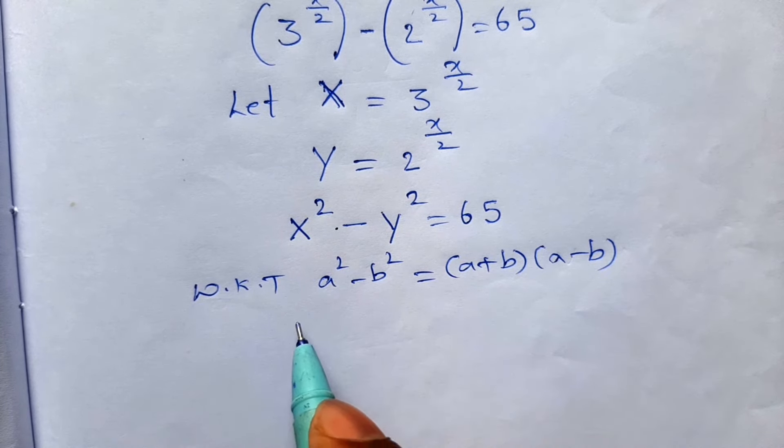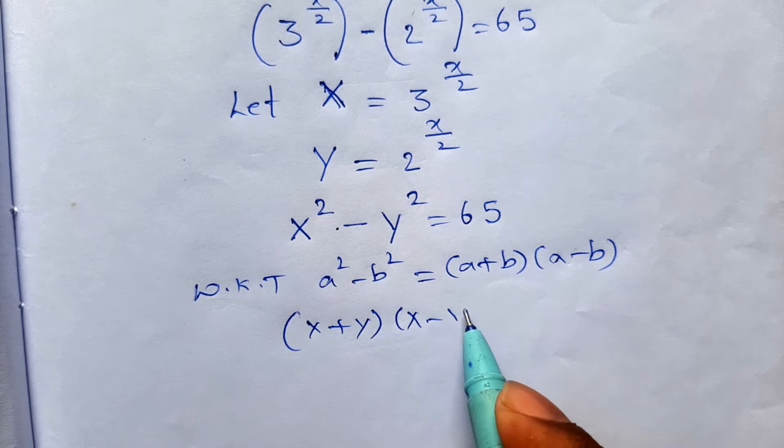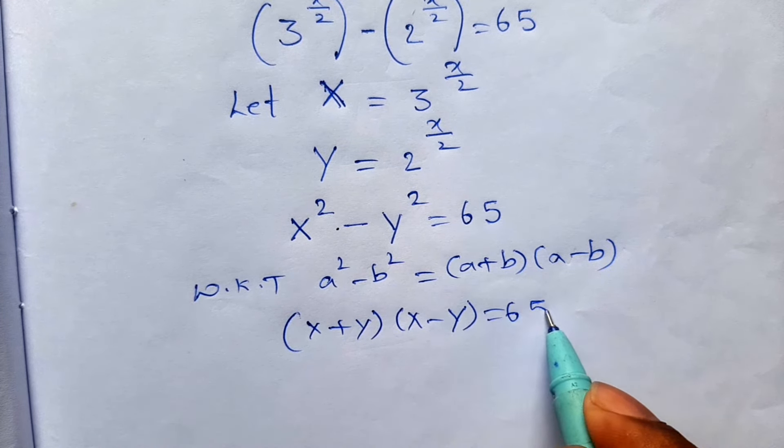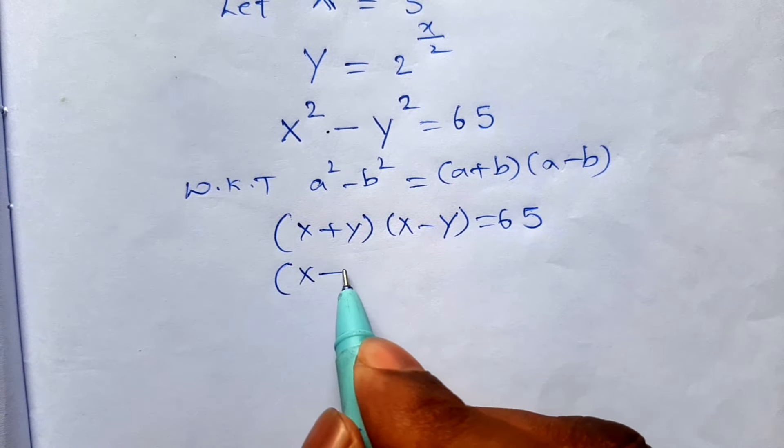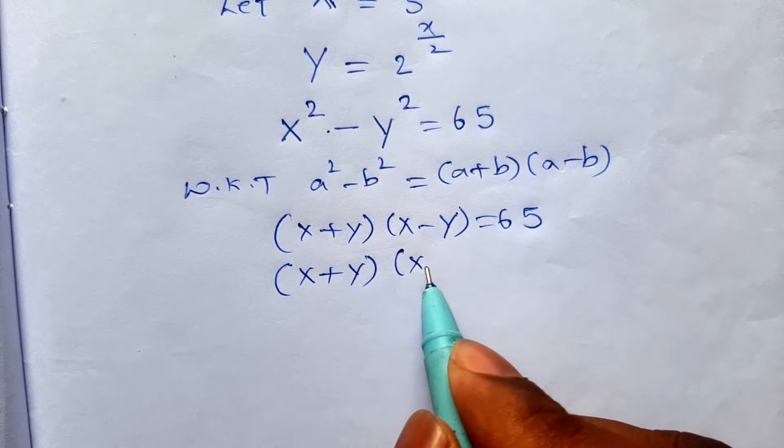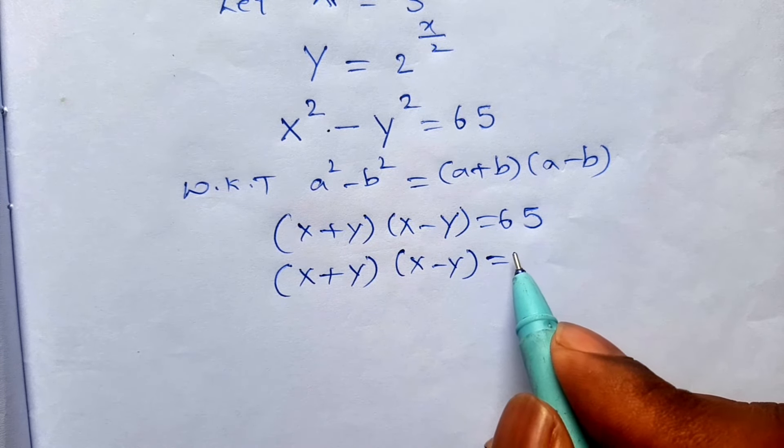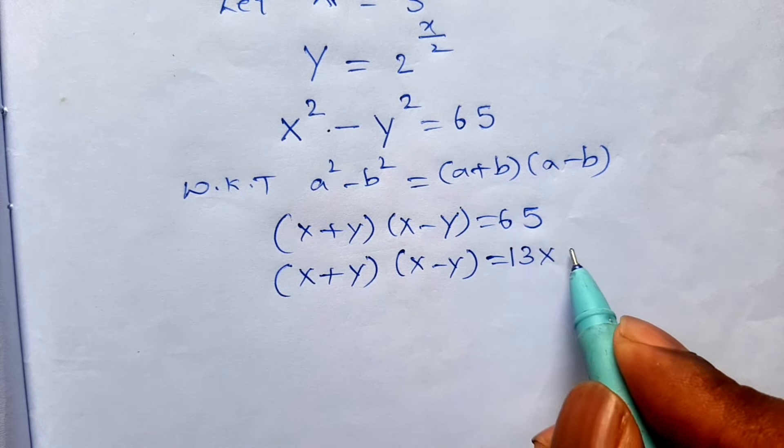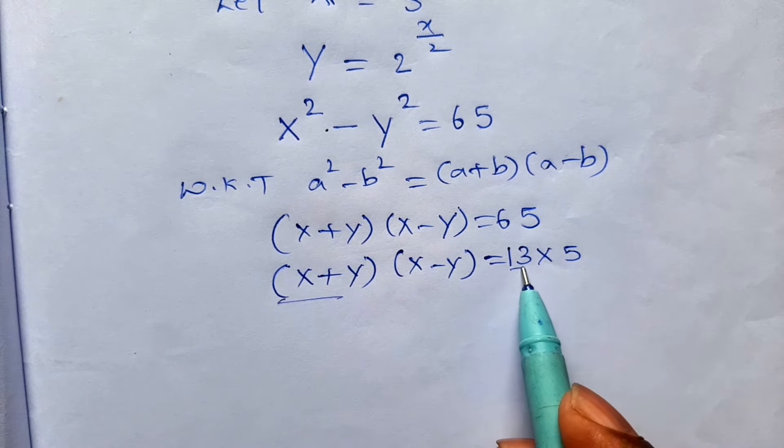This will be x plus y into x minus y is equal to 65. x plus y into x minus y, this one writing a product of two numbers, that is 13 into 5. 65, this one is equal to 13 or this one is equal to 5.